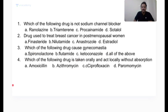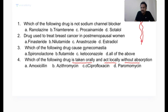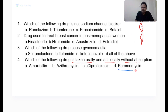Which of the following drug is taken orally and acts locally without absorption? When taken orally, a drug passes through the stomach and intestine. The question asks which drug acts locally in the gut without being absorbed. Paromomycin, streptomycin, and gentamicin are all aminoglycosides, which are highly polar drugs.